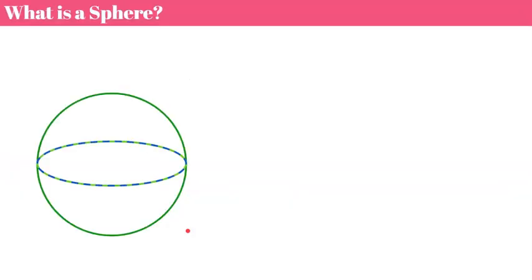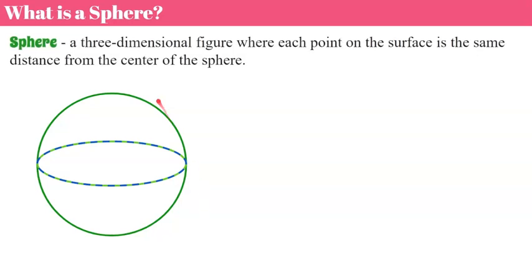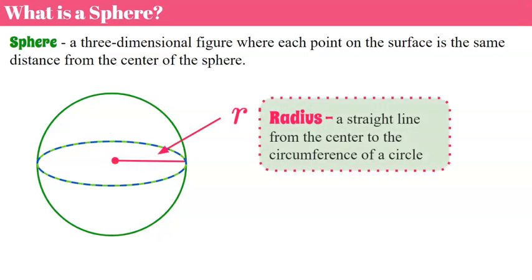First let's talk about what is a sphere. By definition, a sphere is a three-dimensional figure where each point on the surface is the same distance from the center of the sphere. We have our center point, and no matter what direction we go, the radius connects from the center to any outer edge — a straight line from the center to the circumference or outer edge of the sphere.